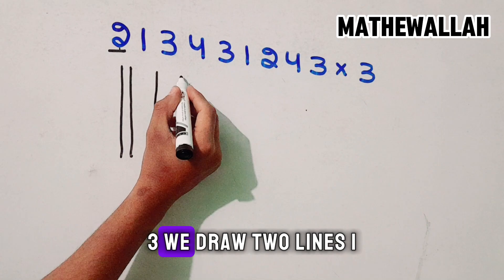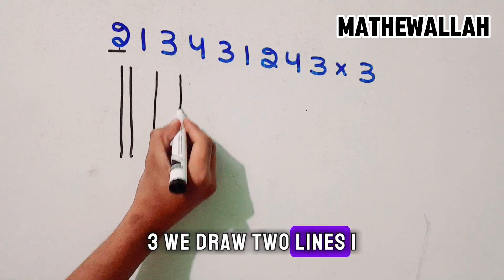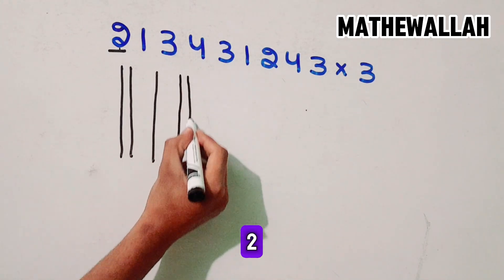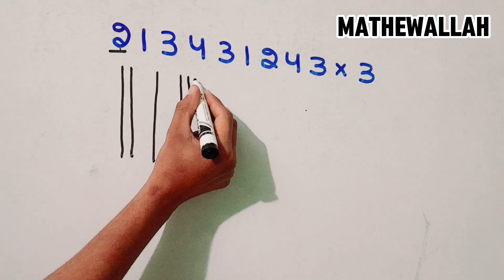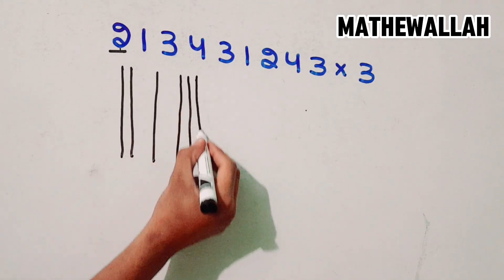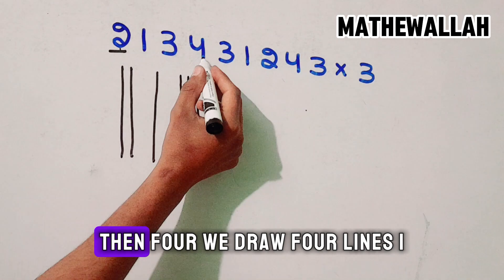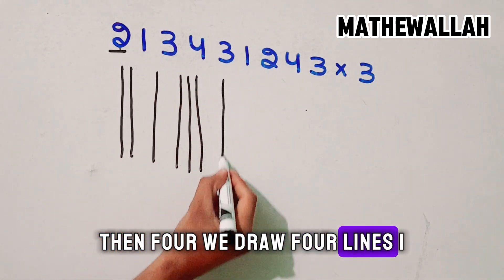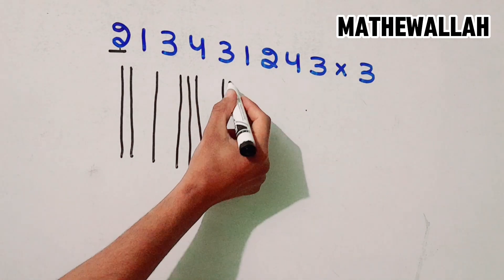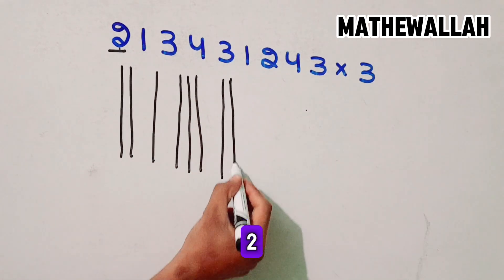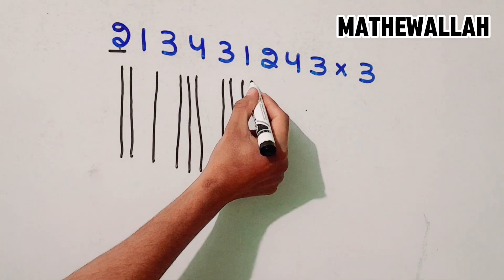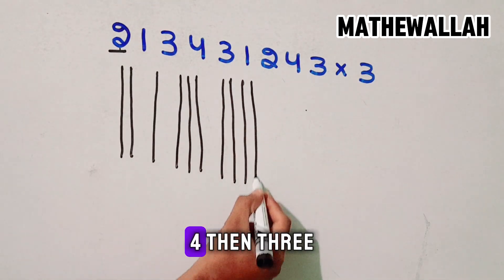3 — we draw 3 lines: 1, 2, 3. Then 4 — we draw 4 lines: 1, 2, 3, 4.